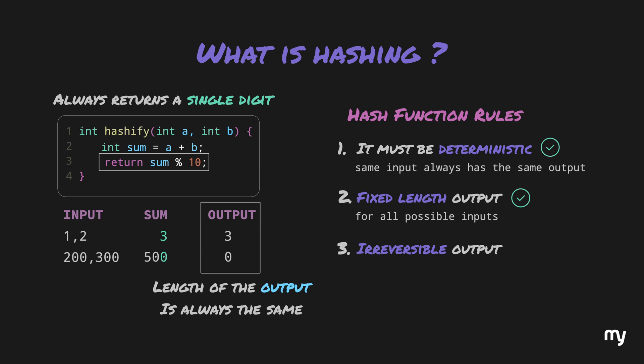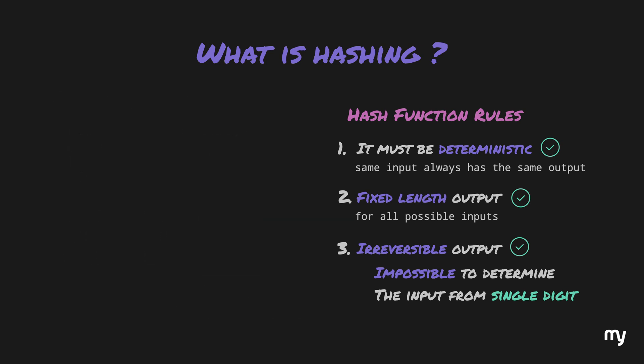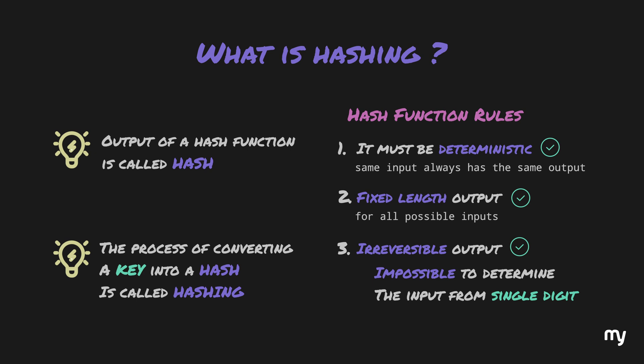Similarly, for rule number 3, it is completely impossible to determine the inputs a and b from a single digit alone. So, we can clearly see that this function satisfies all three rules we discussed before and therefore we can call it a hash function. Talking a little bit about terminology, the output of a hash function is simply called hash. And the process of converting an input or a key into a hash is called hashing.